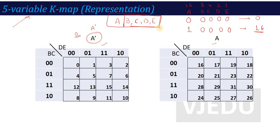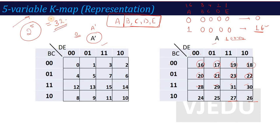When A-bar is 0, the variable A is 0, and then BCDE combinations go from 0 to 15. But when A represents 1, then combining A=1 with BCDE combinations 0000 onwards gives us numbers 16, 17, 18, 19, 20, 21, 22, 23, 24, 25, 26, 27, 28, 29, 30, and 31. Since 2 to the power 5 equals 32 combinations, we have 32 blocks total — 16 blocks in one K-map and 16 in the other. This combination of two 4-variable K-maps is the representation of the 5-variable K-map.